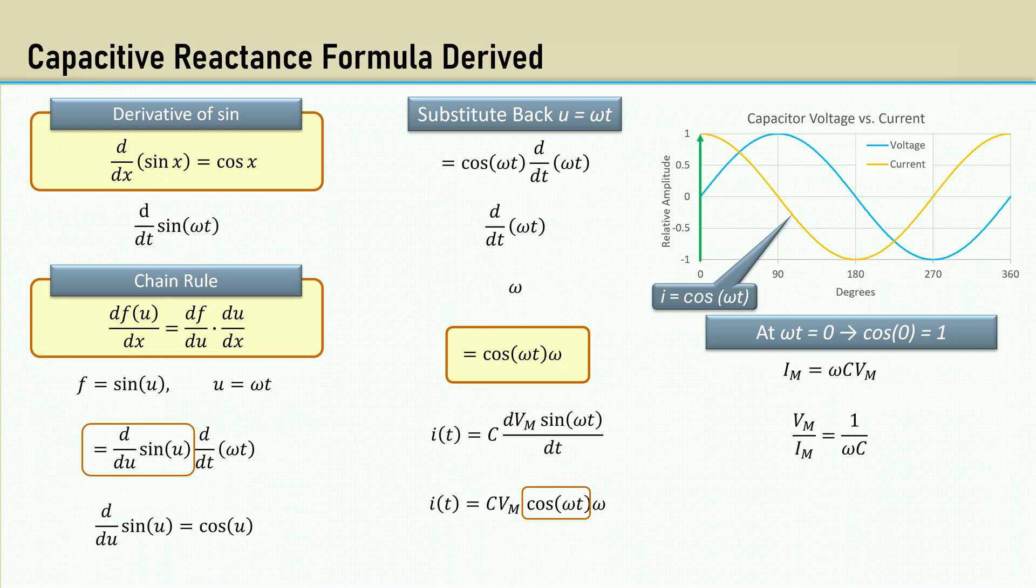Rearrange to solve for the voltage over current, and replace omega with 2π F. And there's that famous capacitive reactance formula.